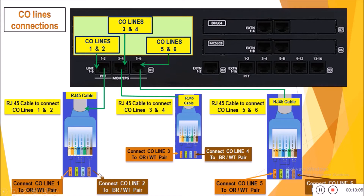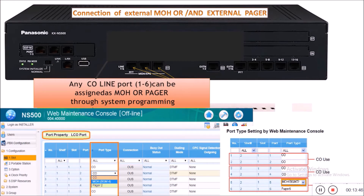The same connection is used when we connect another RJ45 cable to the second port to get line number 3 through the orange-white cable. The last RJ45 cable connected to the third port is used to connect CO line 5 through the orange-white pair and CO line 6 through the brown-white pair. All of these CO lines can also be set as connections for an external music source, music on hold source, or external pager through system programming.